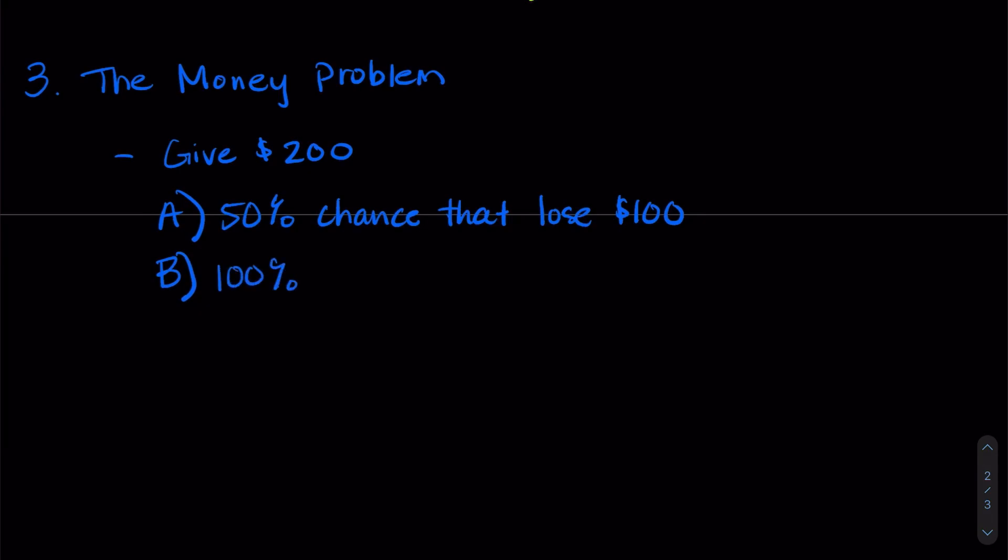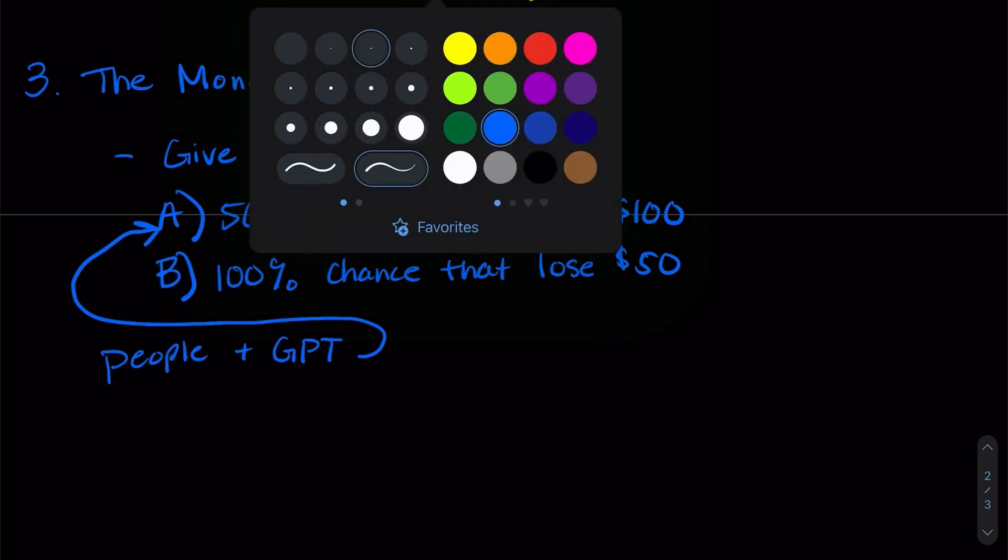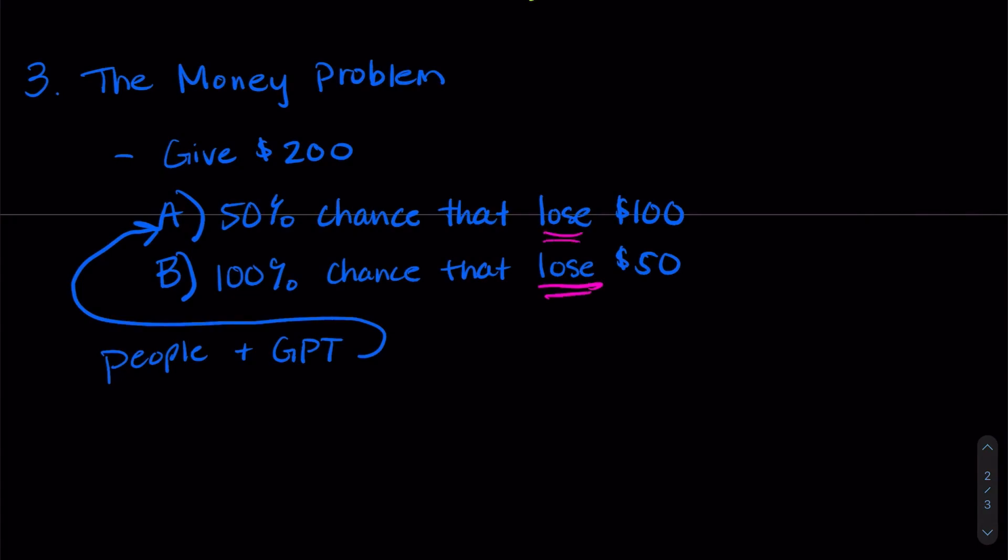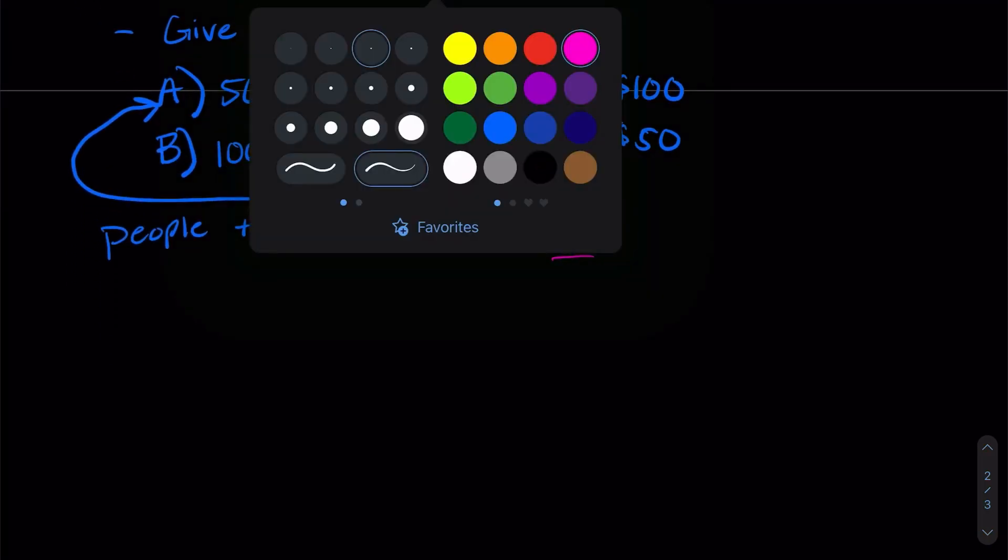Well, people and GPT generally choose A, and this is because they don't want to lose anything. So if there's a chance that they're not going to lose anything, that's what they're going to decide. Now if we change the wording from lose here to gain, then our answers actually shift, because here we have a 100% chance that we gain something, which is really interesting. And people and GPT have this same change if we change the wording here.